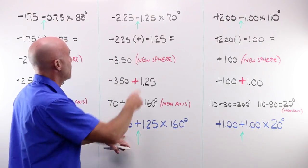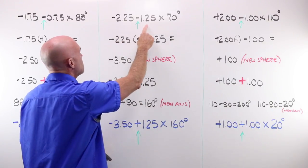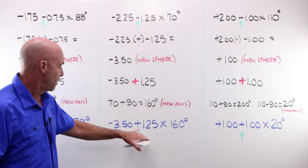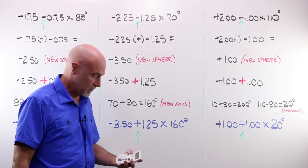My rewritten, it's not new, it's just written in a different way. Minus 2.25 minus 1.25 at 70 becomes minus 3.50 plus 1.25 at 160 degrees.